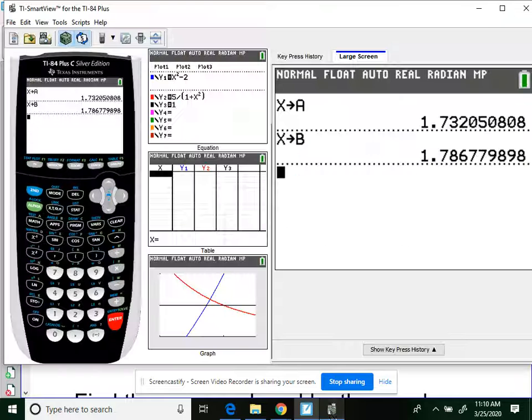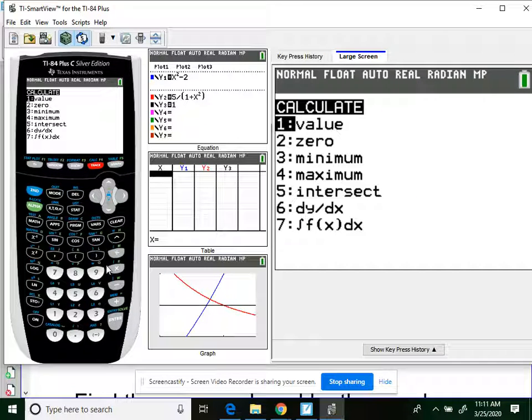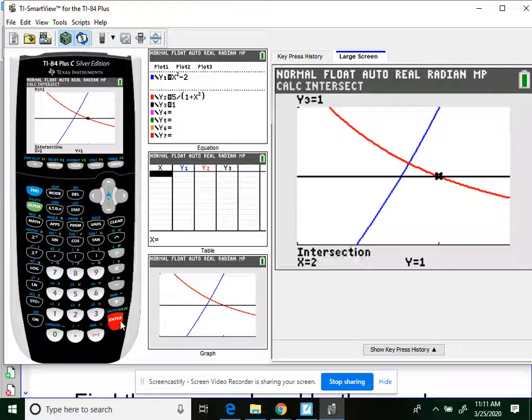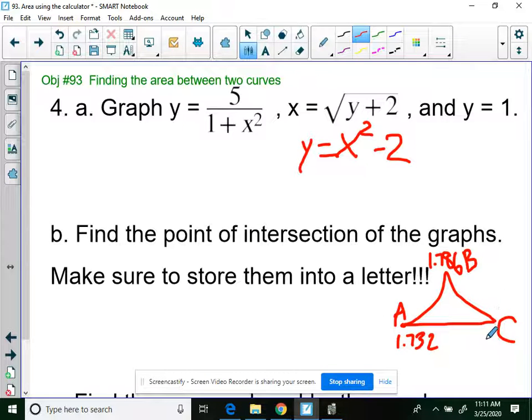And then C. Second. Trace. Intersect. Enter, enter, enter. 2. That's a nice point. So I don't even need to put that into a letter.